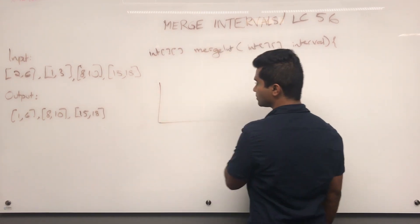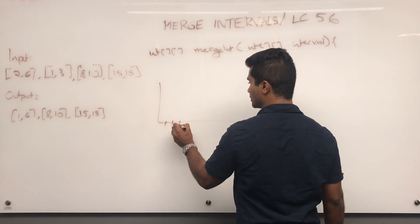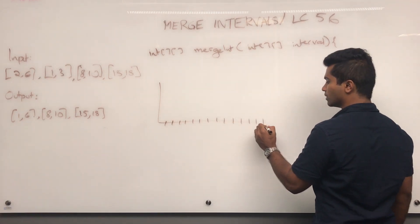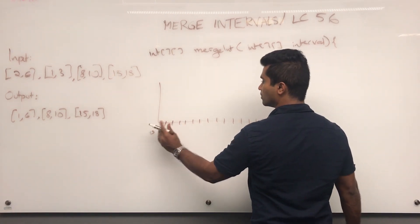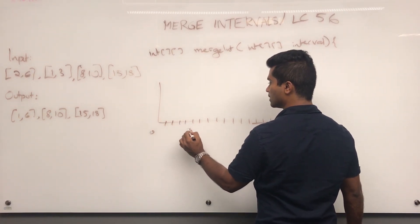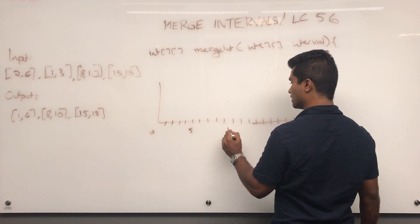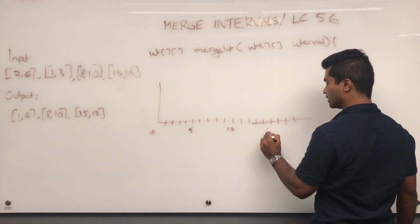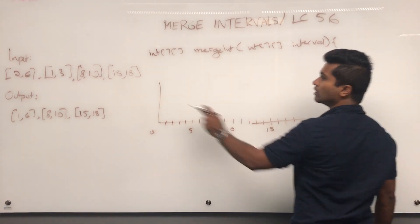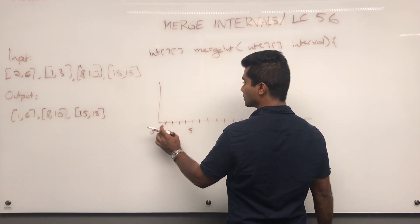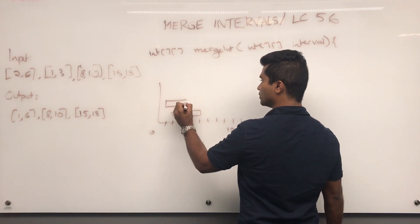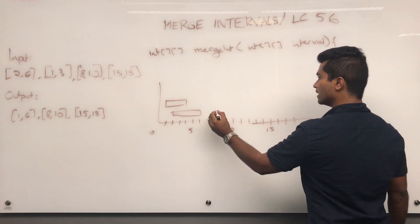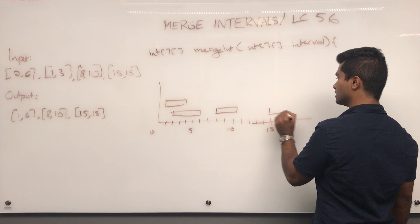So for example, we have this given one. Drawing a number line from 0 to 18, we have an interval from 2 to 6, an interval from 1 to 3, an interval from 8 to 10, and an interval from 15 to 18.